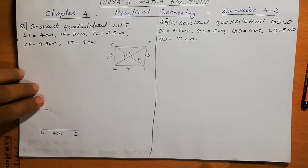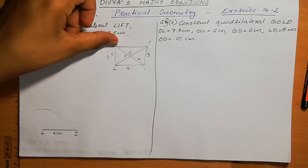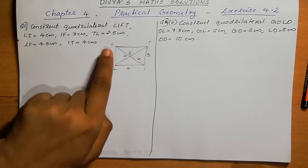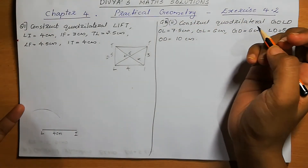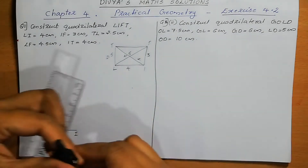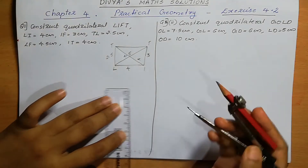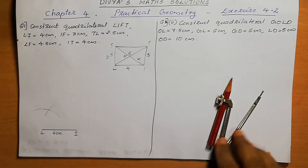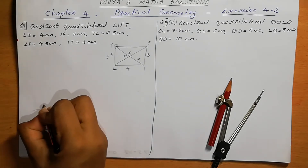We will get the point T, but we don't know the exact point yet. The next point of intersection: FT is there but we don't know the measurement, and we don't know point F either. But we know point I — I to T distance is 4 cm. So we can take IT = 4 cm. Here we got the point of intersection, and this point of intersection is T.